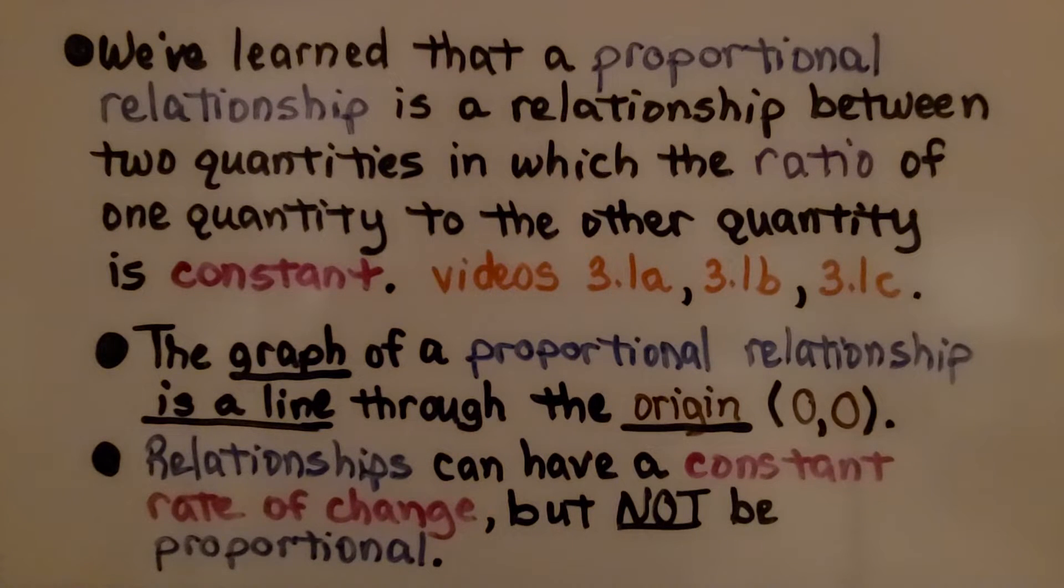The graph of a proportional relationship is a line through the origin (0,0). Relationships can have a constant rate of change but not be proportional.